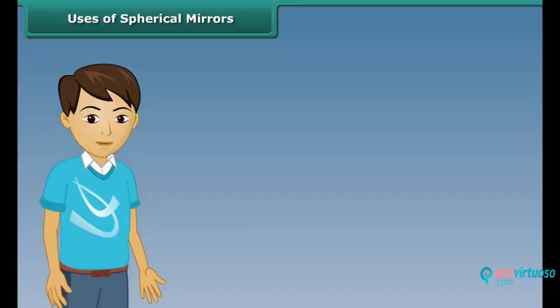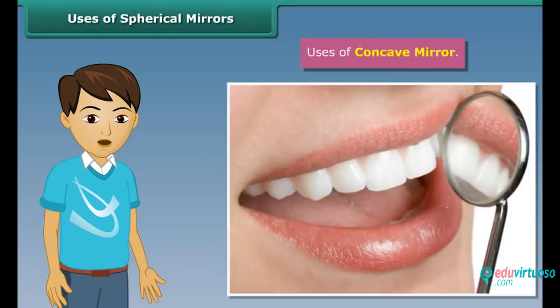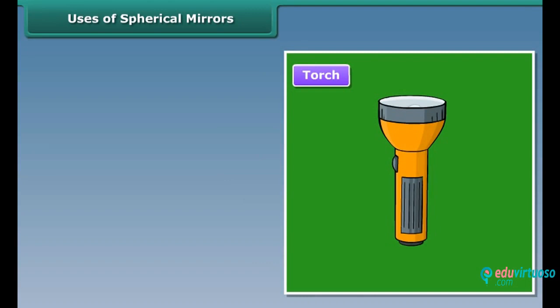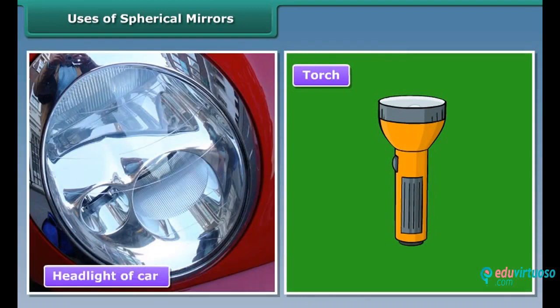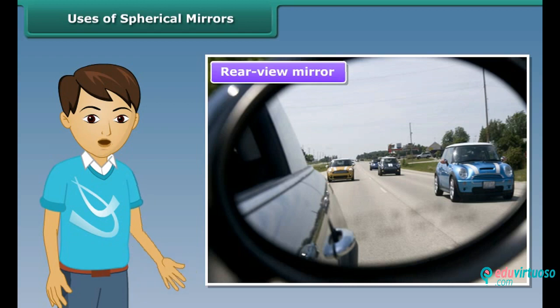Uses of spherical mirrors — concave mirrors are used by dentists to obtain a magnified image of the teeth. They are also used as reflectors of torches and headlights of cars and scooters. Similarly, convex mirrors are used as rear-view mirrors in cars and on motorcycles to help drivers see the traffic behind them.